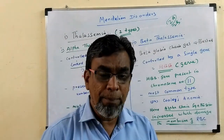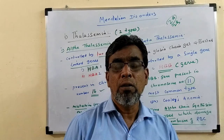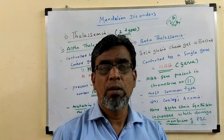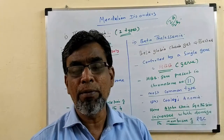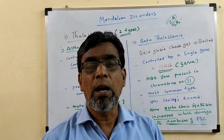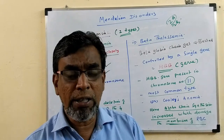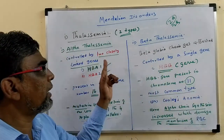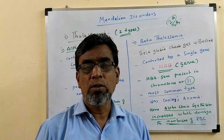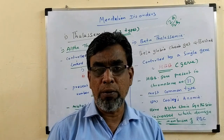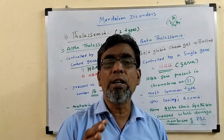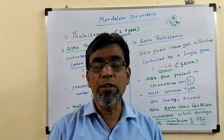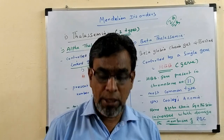So once again, in this topic we have discussed Mendelian Disorders. Alteration or mutation in the gene structure causes a disorder. The four disorders are Thalassemia, Phenylketonuria, Albinism, and Huntington's Chorea. For Thalassemia, there are two types: Alpha Thalassemia and Beta Thalassemia. These are the important features of this unit. In the next video we are going to discuss Albinism — what is Albinism, what are the types, and what causes Albinism. Thank you, students.